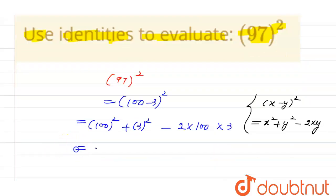So this is equal to 10,000 plus 9 minus 600. Now this is equal to 10,009. The addition of 10,000 and 9 will be 10,009 minus 600. We have to subtract 600 from it.